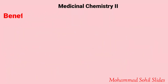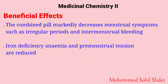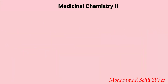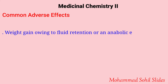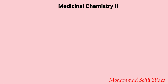There are some beneficial effects: the combined pill markedly decreases menstrual symptoms such as irregular periods and intermenstrual bleeding. Iron deficiency anemia and premenstrual tension are reduced, as are uterine fibroids and functional cysts of the ovaries. Common adverse effects include weight gain due to fluid retention or an anabolic effect, mild nausea, flushing, dizziness, depression or irritability, and skin changes such as acne or increased pigmentation.